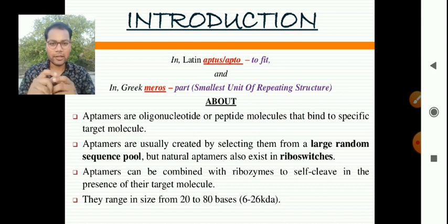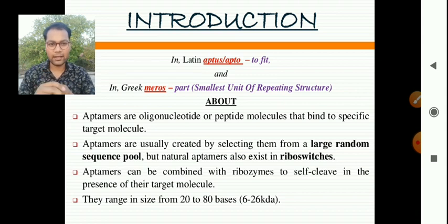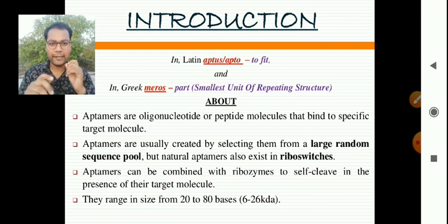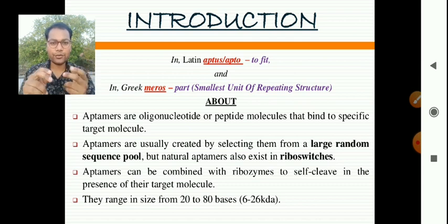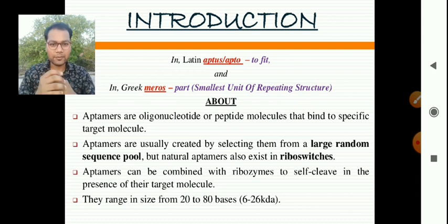The word aptamer is made up of two words: 'apto' is a Latin term which means 'to fit,' and 'meros' is a Greek word meaning a smallest unit of repeating structure or 'a part.' These two words combined together to form aptamer. So as the name suggests, aptamers are oligonucleotides.